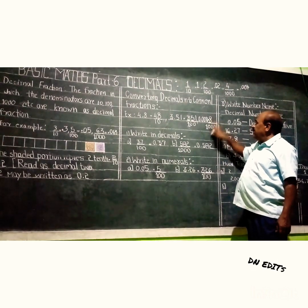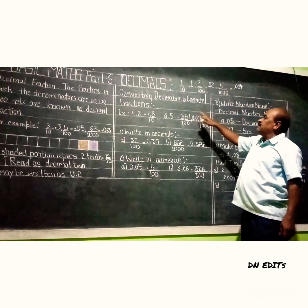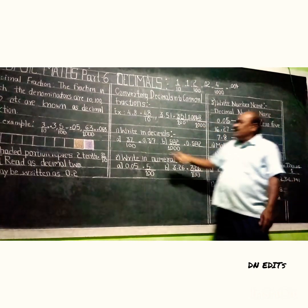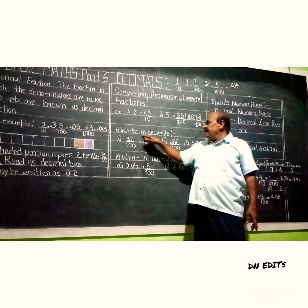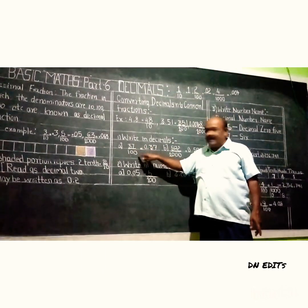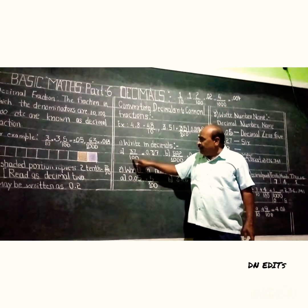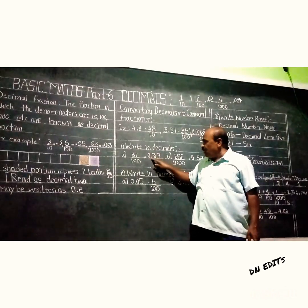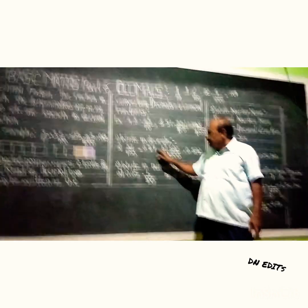This is the conversion of decimal into a common fraction. Now in the decimal part, writing decimals: 37 by 100 — look here, after 1 there are two zeros, so from the back you count one, two and put the decimal there. It becomes 0.37. So 37 by 100 equals 0.37.